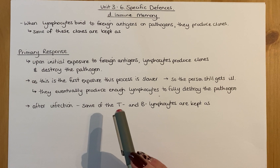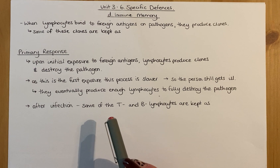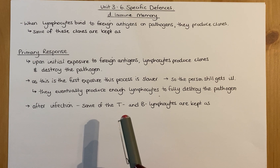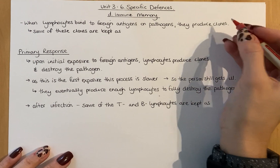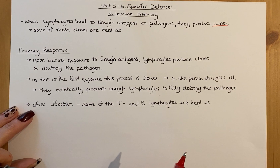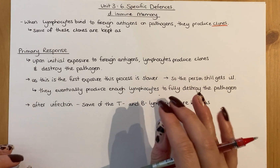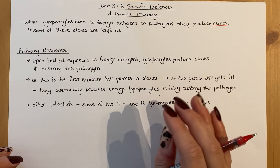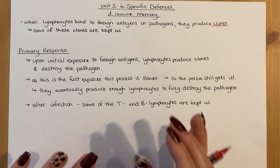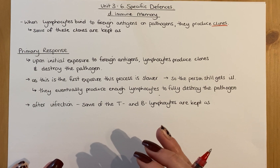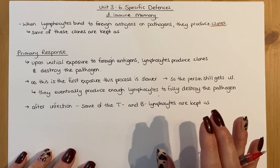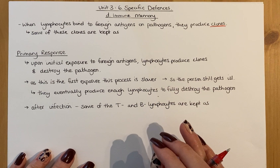To give you an introduction to immune memory: when you have lymphocytes that bind to foreign antigens and pathogens, they produce clones — and we know that already. That's a totally normal response for all lymphocytes, and it won't matter which type. This will be the case for both B and T lymphocytes. These clones are then used to destroy the antigens and pathogens and get rid of that infection.